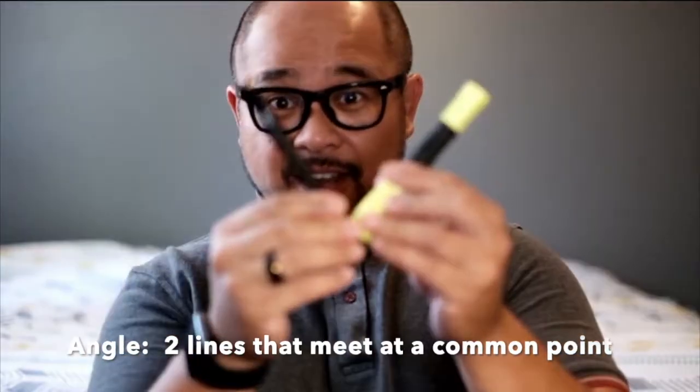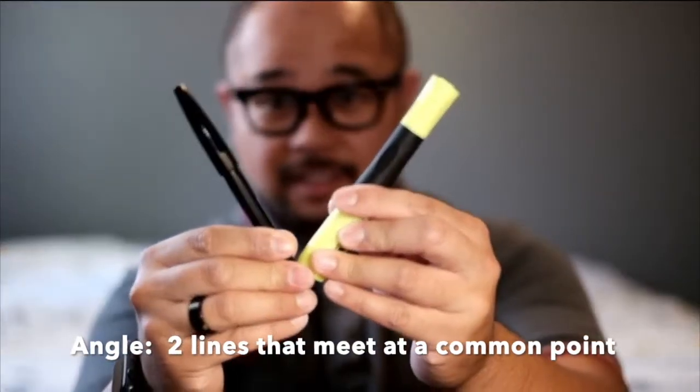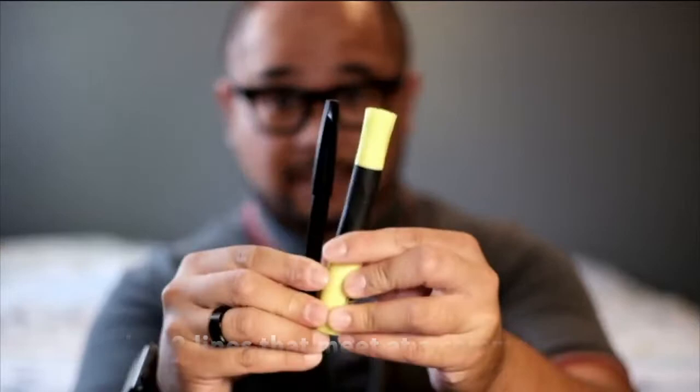Hello, this is Mr. Kinyanola and today I'm going to teach you all about angles. So here's the definition of an angle. An angle is just two lines that meet at a common point like this. So this is an angle and angles are everywhere.